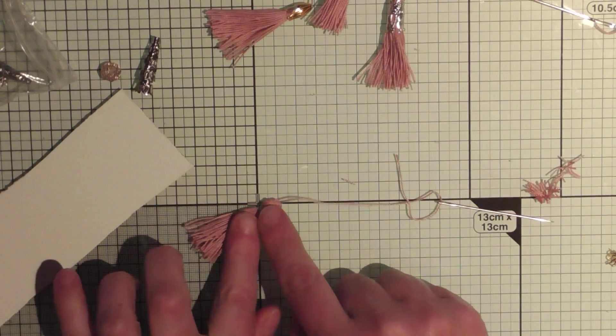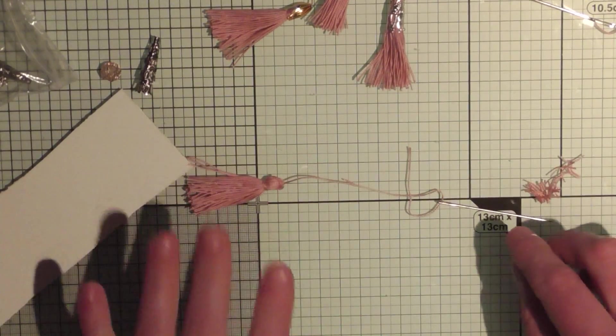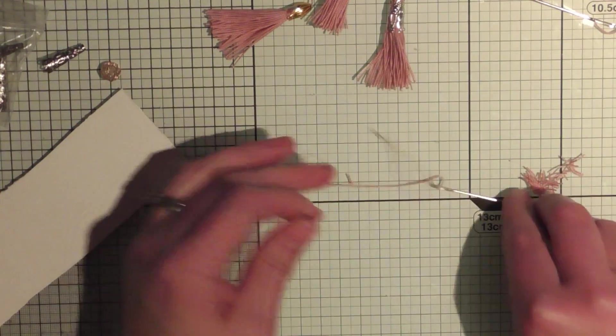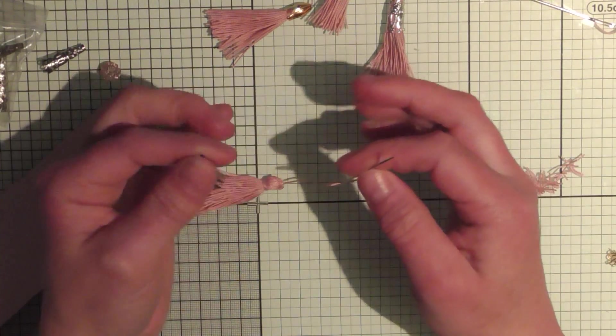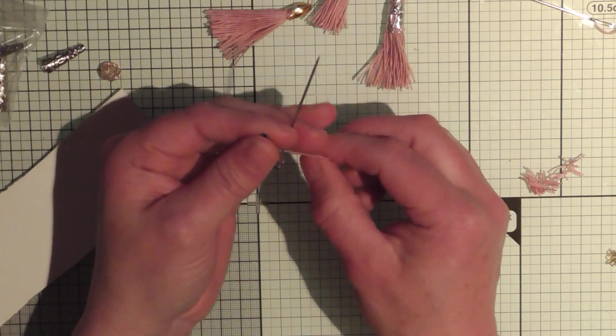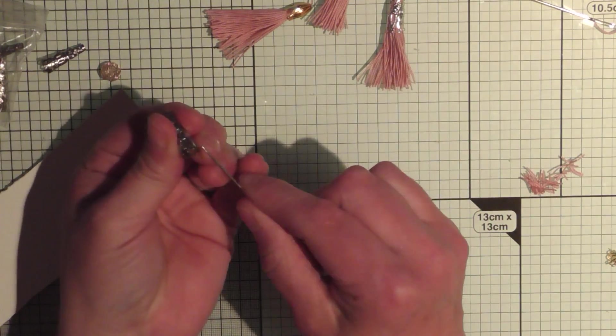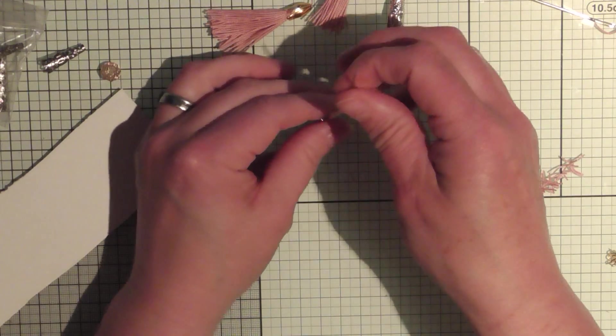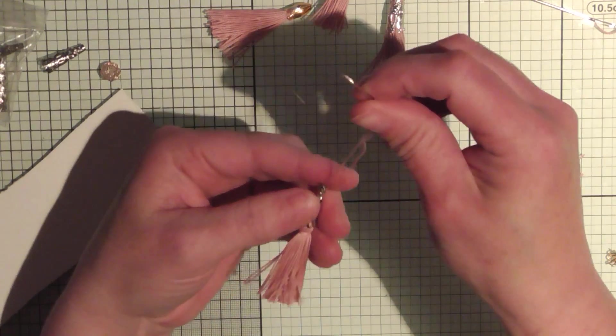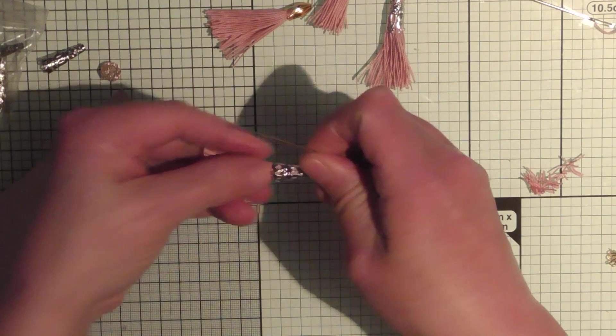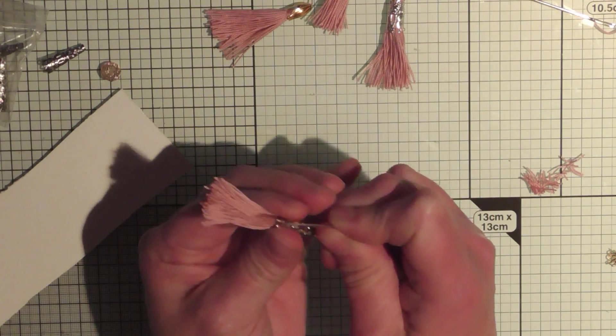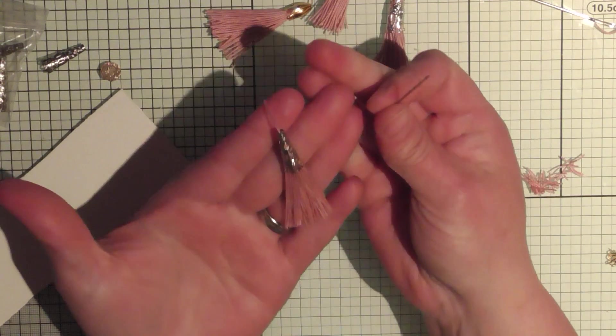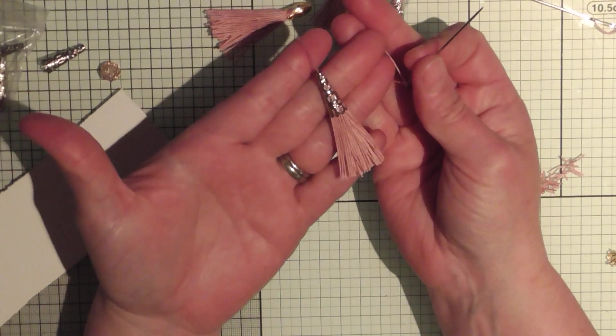So I'm going to use this bead cap here. Now it's still threaded, so I can just literally make sure it stays on, thread it through my bead cap, making sure that the hole's big enough for the needle, and then just gently pull your tassel in, like so. And there you go, that's all you do, and you've got yourself a lovely little tassel. Again, you could embellish that further.